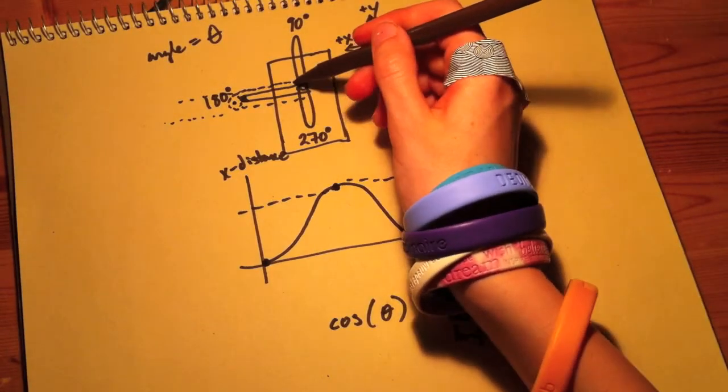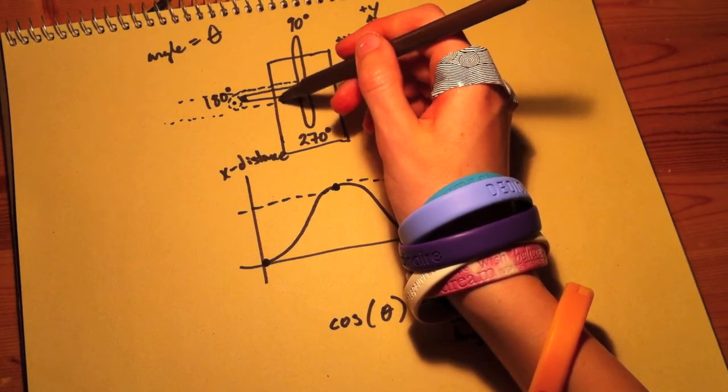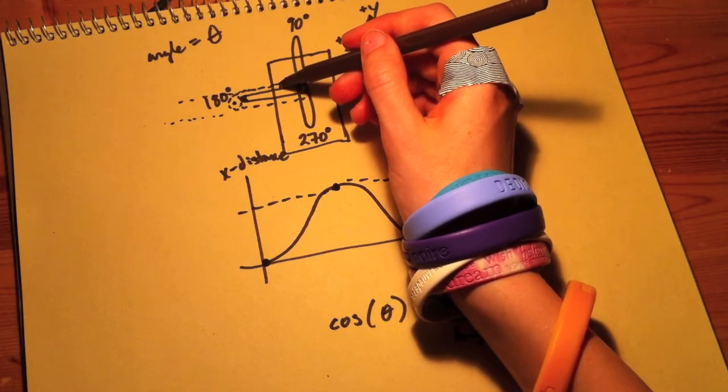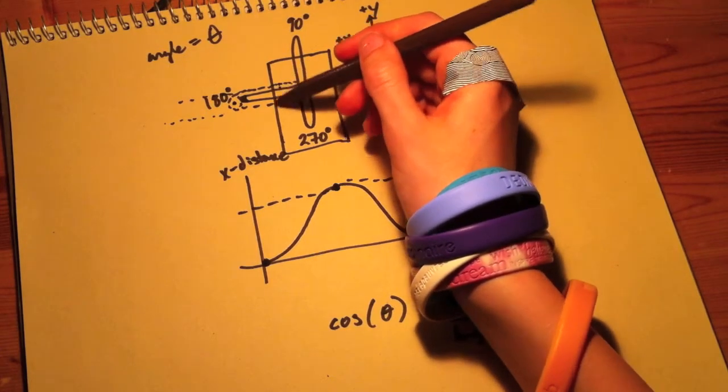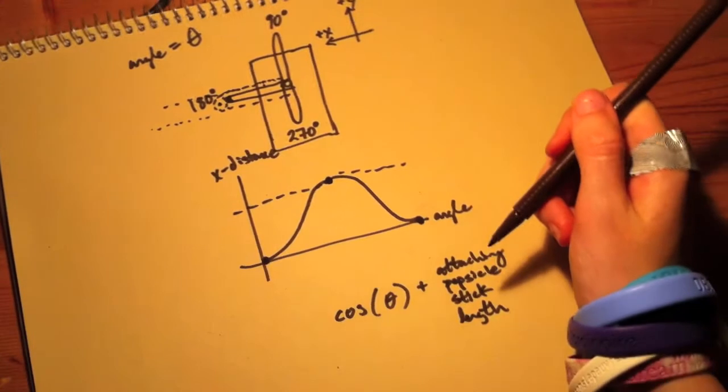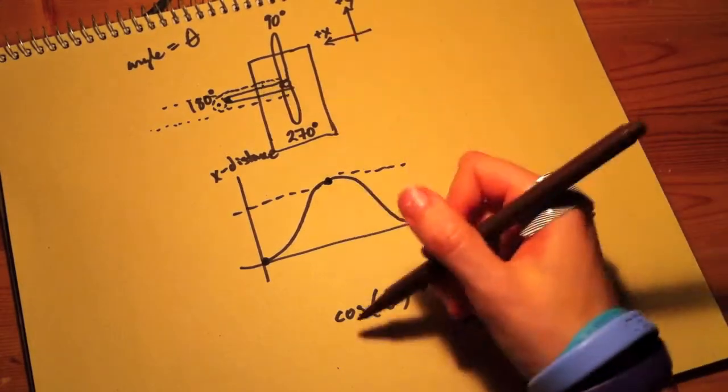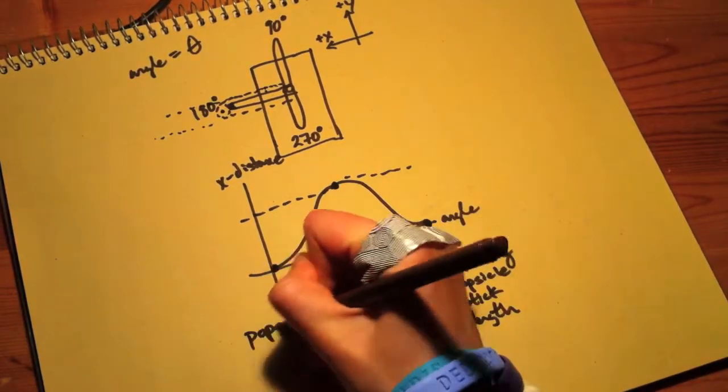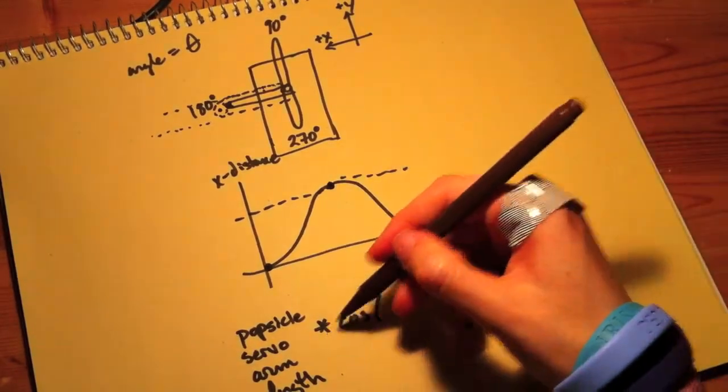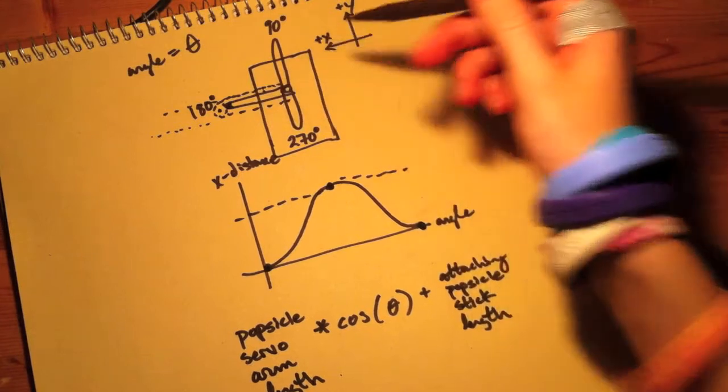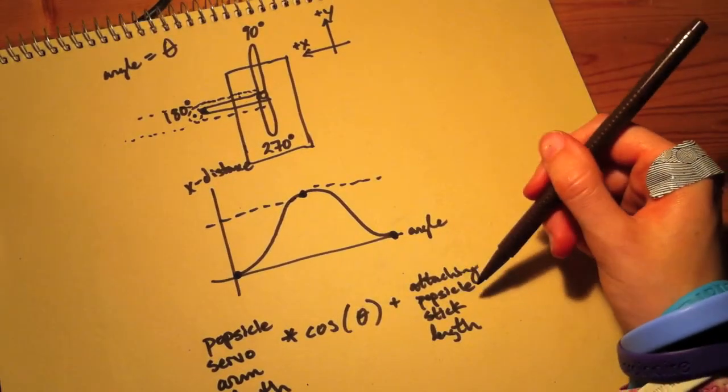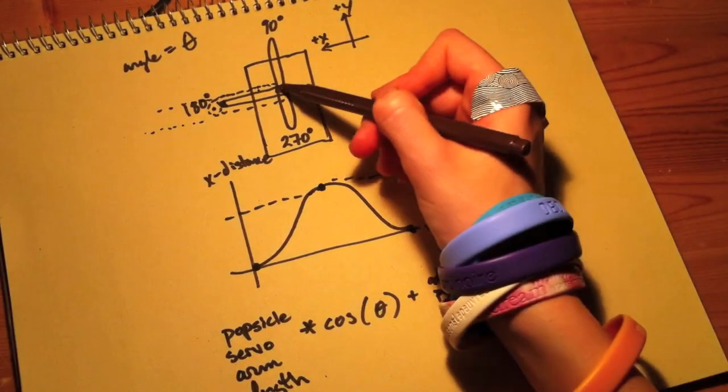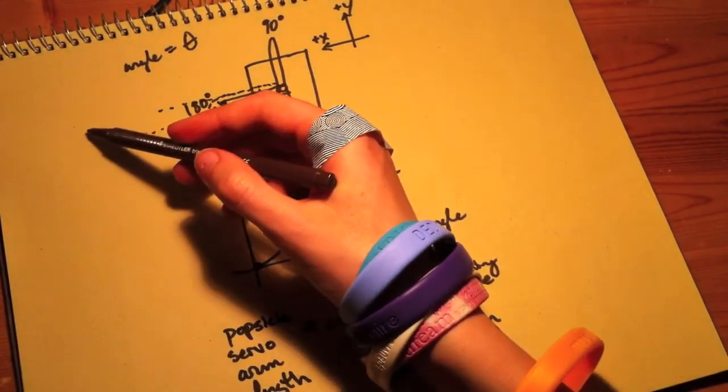We also need to account for this popsicle stick servo arm addition. In some cases, yours might be quite longer than the servo arm, or it might not. So all that we have to do is multiply this cosine by that angle, so times the cosine of this angle. And then we add the attaching popsicle stick length. And that will give you the distance from the center point to RoboBird's beak.